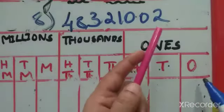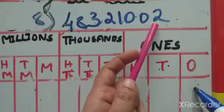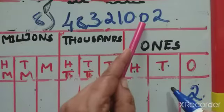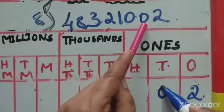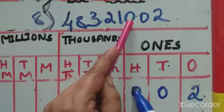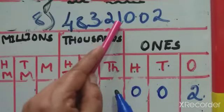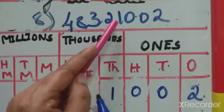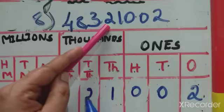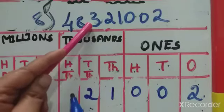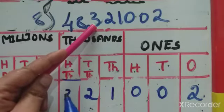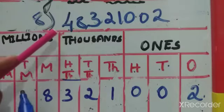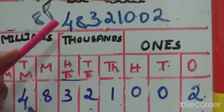Now filling the chart from the right: 2 in ones place, 0 in tens place, 0 in hundreds place, 1 in thousands place, 2 in ten-thousands place, 3 in hundred-thousands place, 8 in millions place, 4 in ten-millions place.